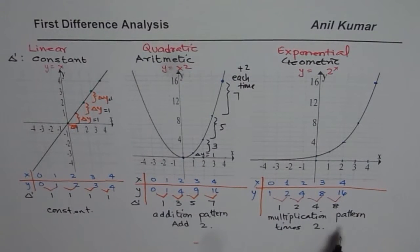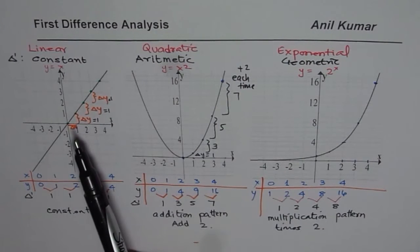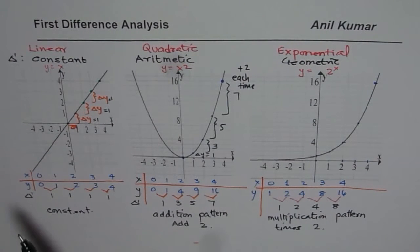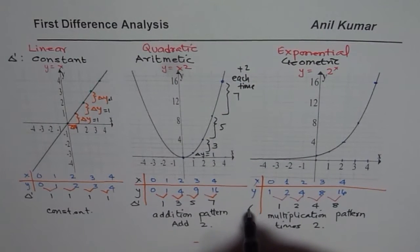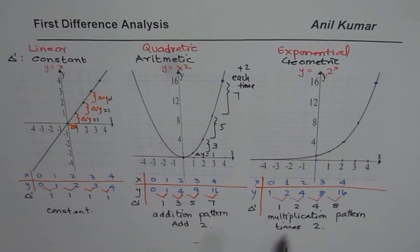So what you notice here is that if the function is a linear function, then the first difference is constant. If the function is quadratic, then you have addition pattern in the first difference. And if the function is exponential in nature, in that case, you will have multiplication pattern in the first difference. So by analyzing the first difference itself, we get fairly good idea about the type of graph, especially if it is linear, quadratic, or exponential.